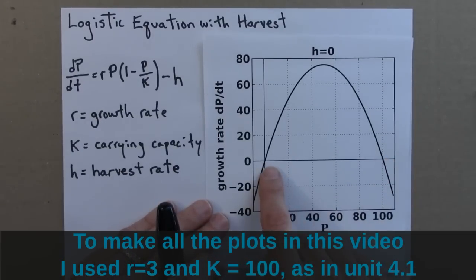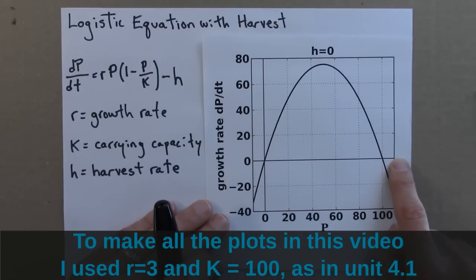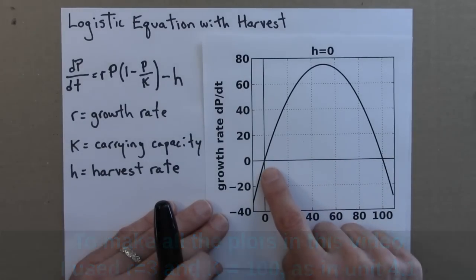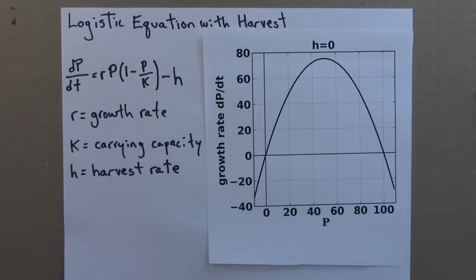We will have, if the population is in here, it's increasing. If the population is above 100, it's decreasing. So we have a stable fixed point at 100 and an unstable fixed point at 0. So I'll draw the phase line for that.